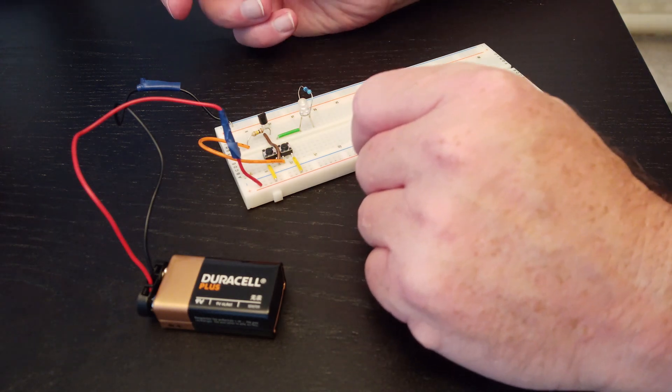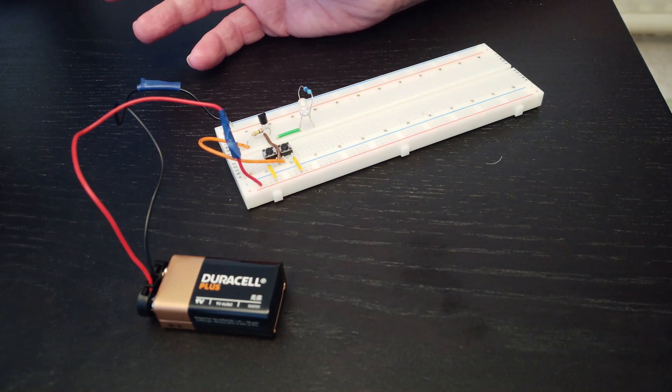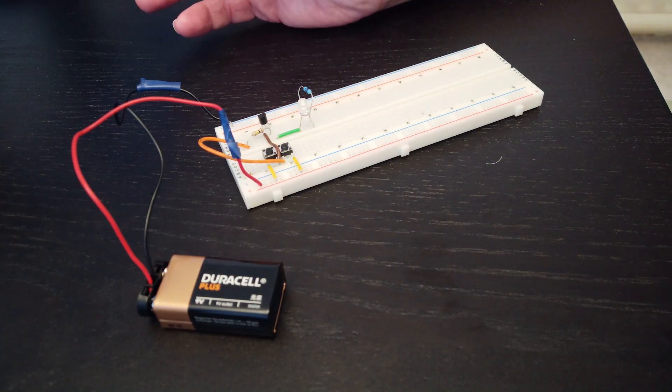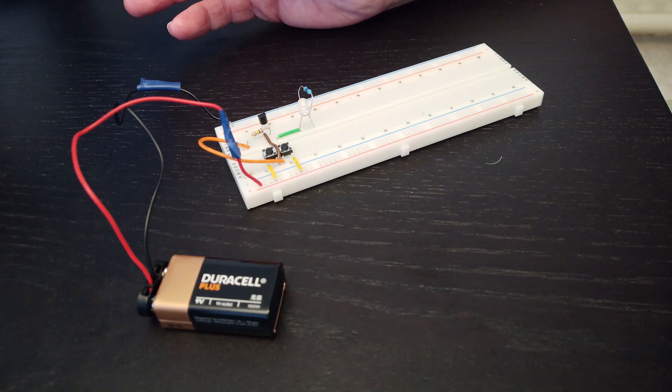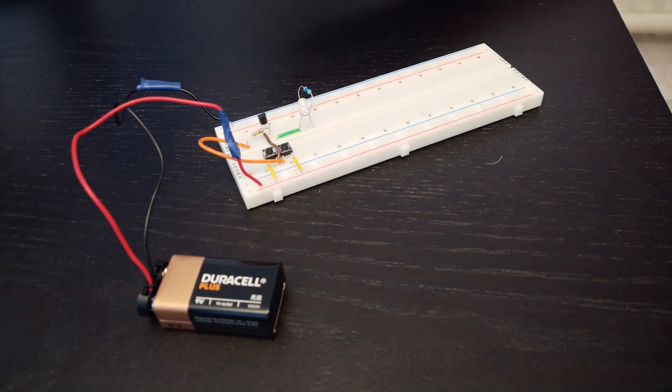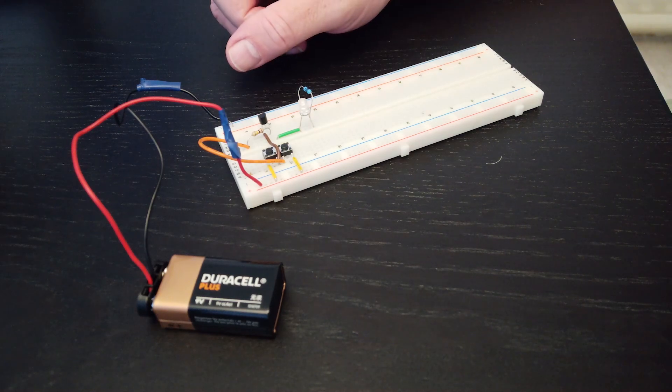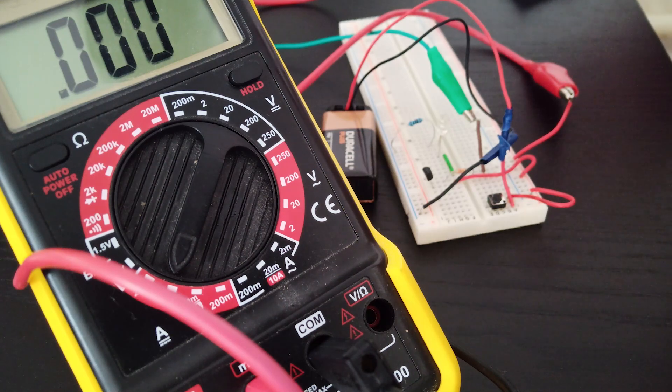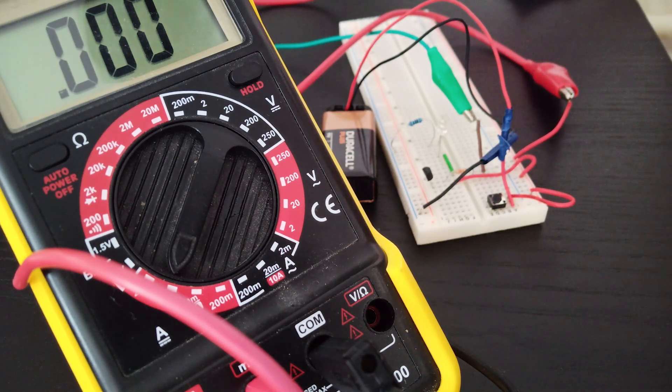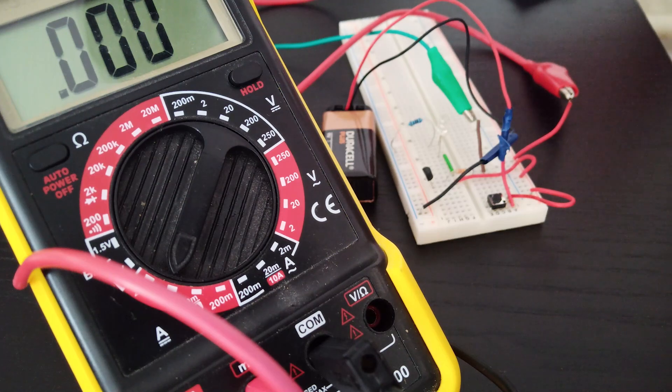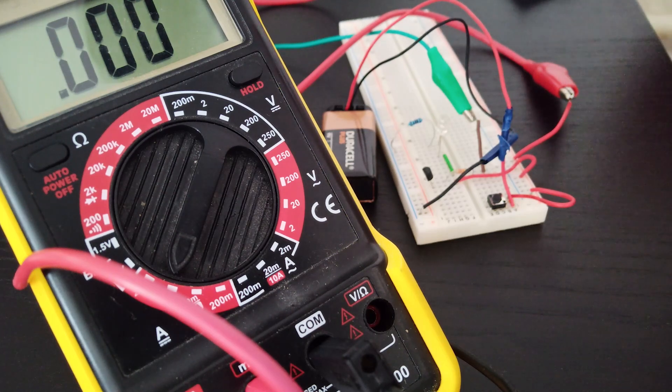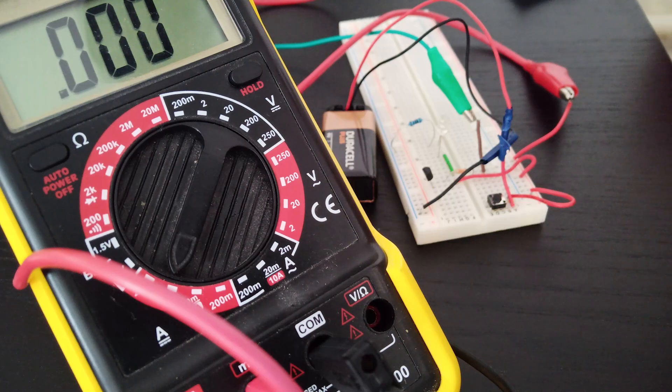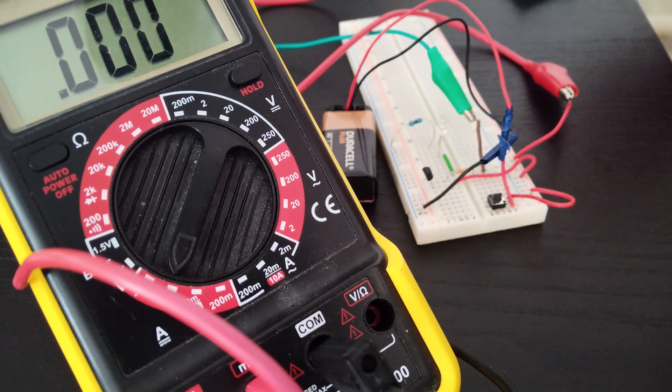So effectively what we've got going on here is that a very small current being applied to the base is actually controlling a larger current that is passing through the collector and the emitter. A similar property could be found in relays where you can have just a small current that is enough to activate the relay coil but is controlling a large current that's going through the switch connectors. The ability for a transistor to work as a switch is of course extremely useful. In fact, it's the basis for pretty much all of digital electronics. But the other useful thing that a transistor can do is act as an amplifier, and that's what we're going to test with this circuit.